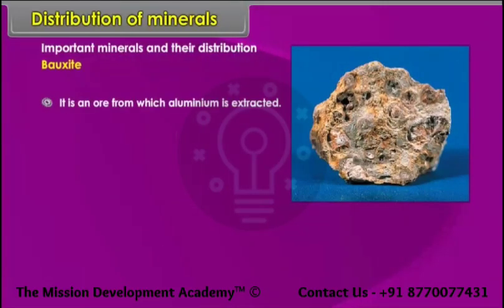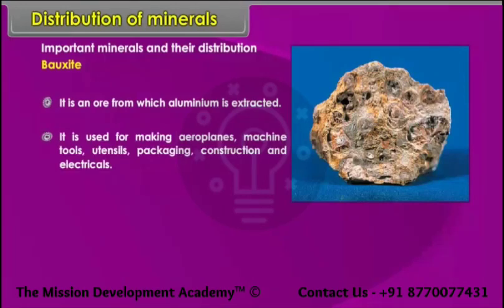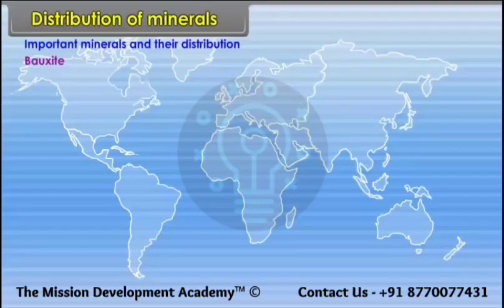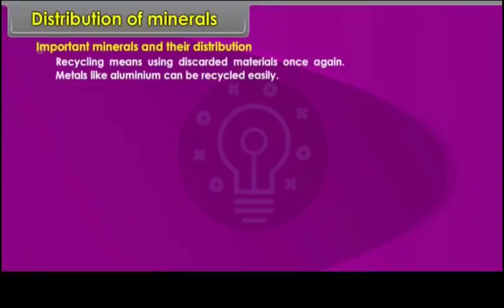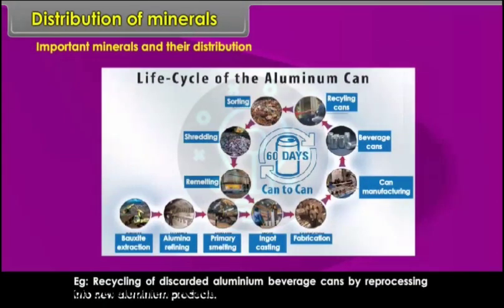Bauxite is an ore from which aluminium is extracted. It is used for making airplanes, machine tools, utensils, packaging, construction and electrical materials. Location — World: Australia, Guinea, Jamaica and Brazil. Recycling means using discarded materials once again; metals like aluminium can be recycled easily, for example recycling of discarded aluminium beverage cans by reprocessing into new aluminium products.